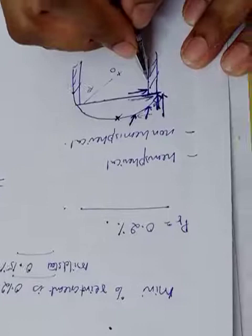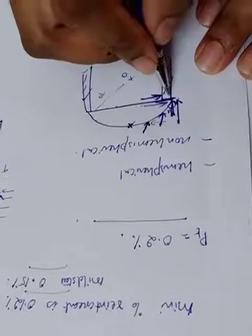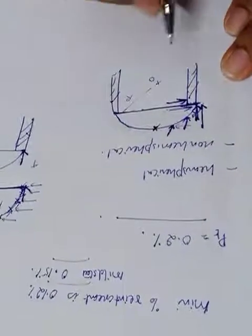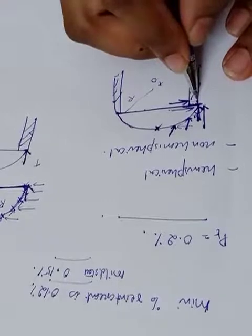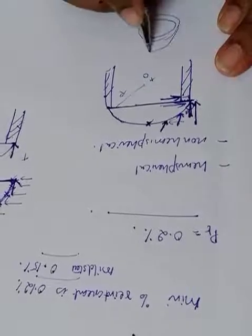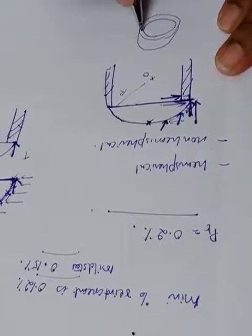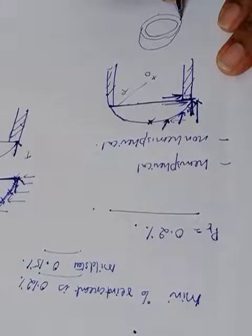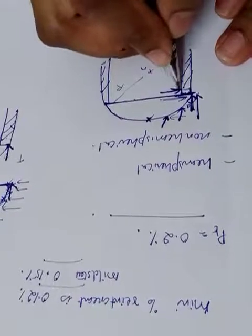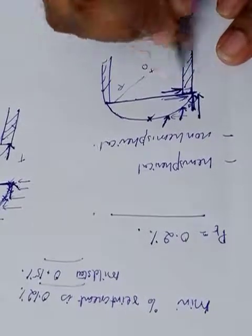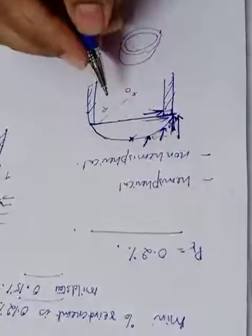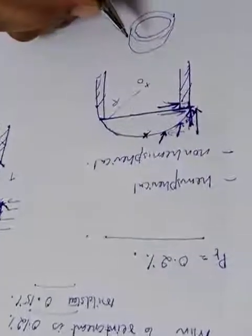In non-hemispherical cases, we provide a ring beam below the dome—a circular beam. This support with the circular beam will take care of the horizontal forces, the horizontal component of the inclined meridional thrust, and prevent bursting of the support.